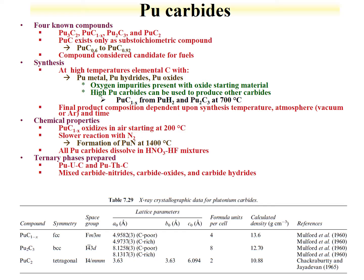Ternary phases of plutonium have been prepared with uranium and thorium, and there are also mixed carbides with nitrides, oxides, and halides.